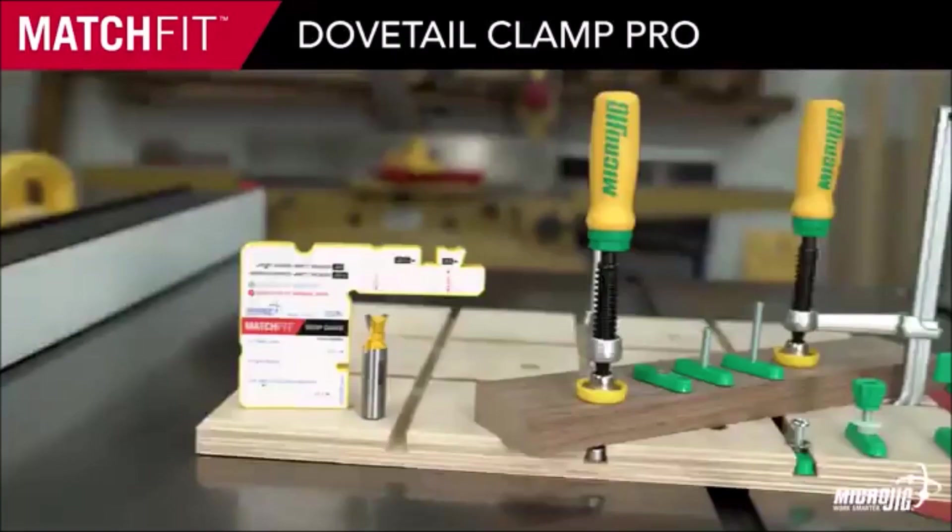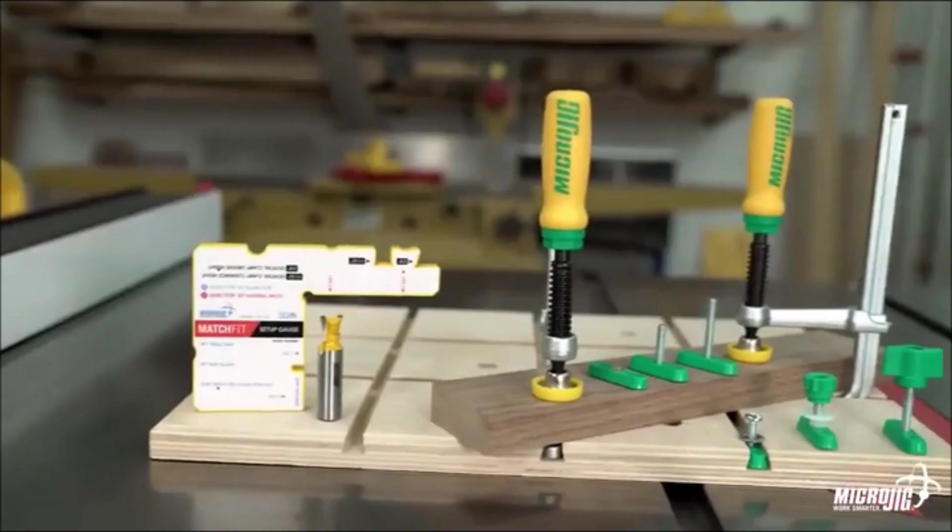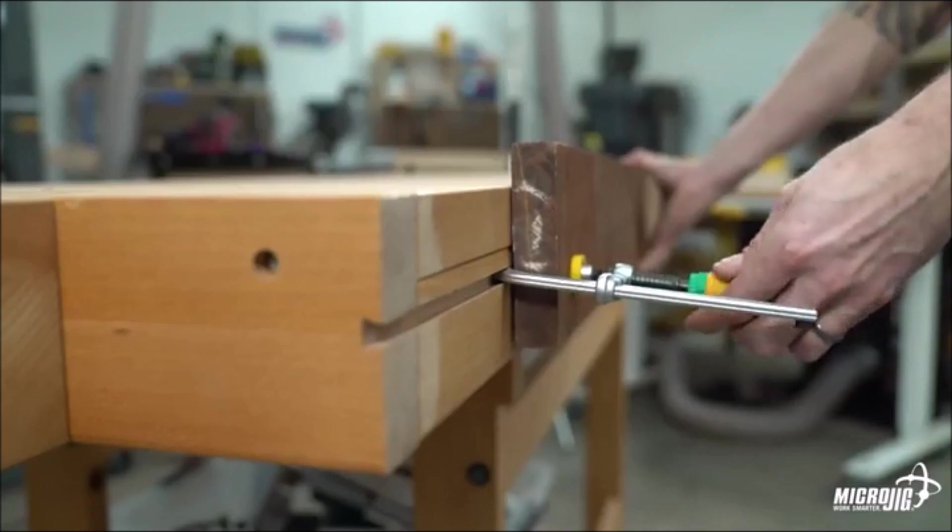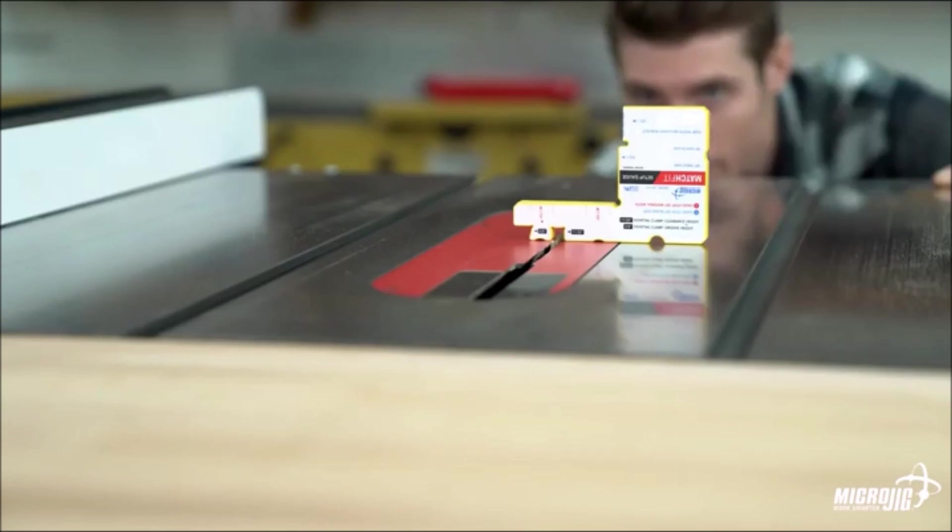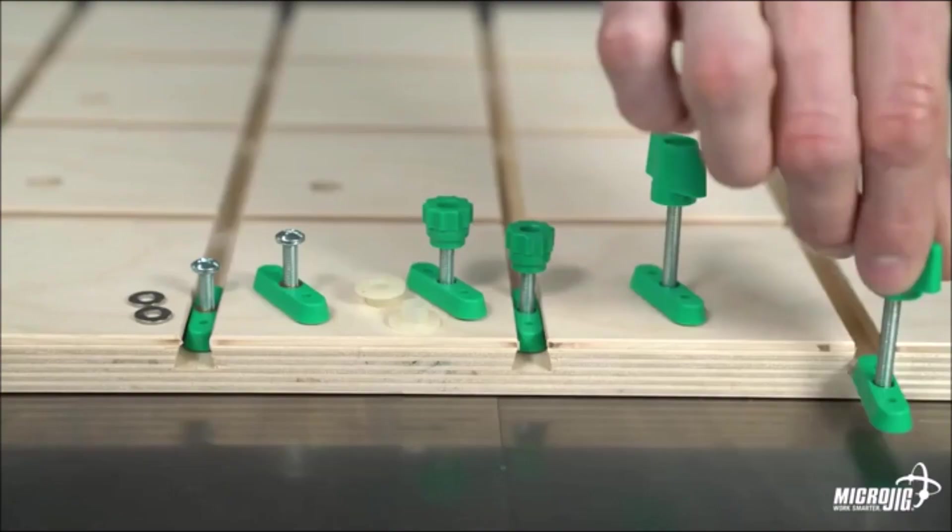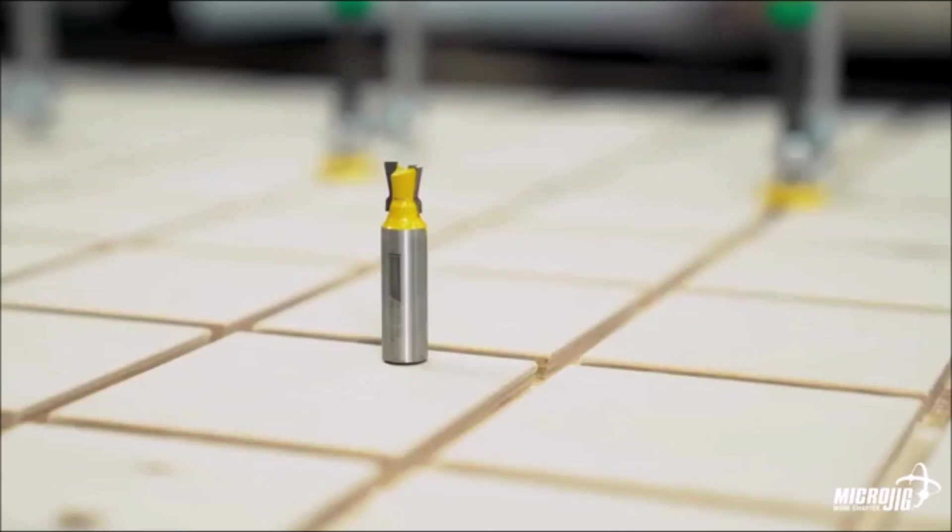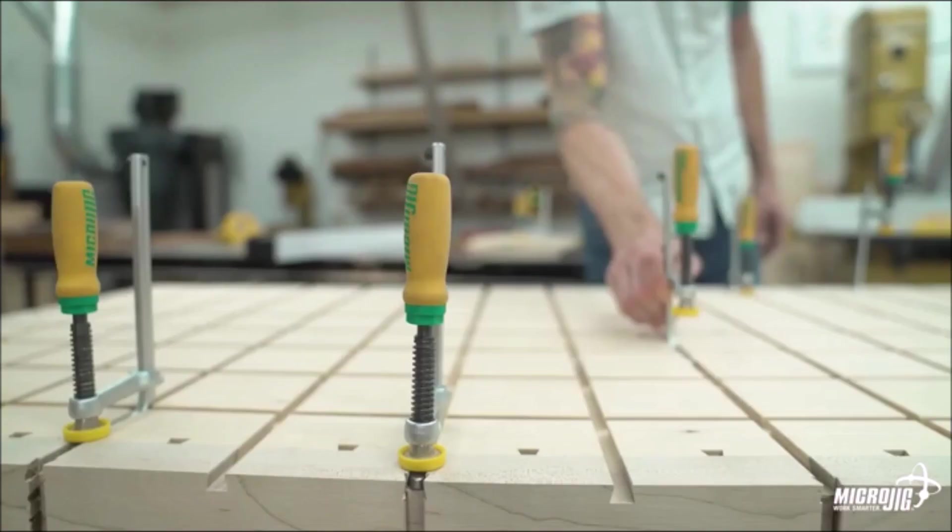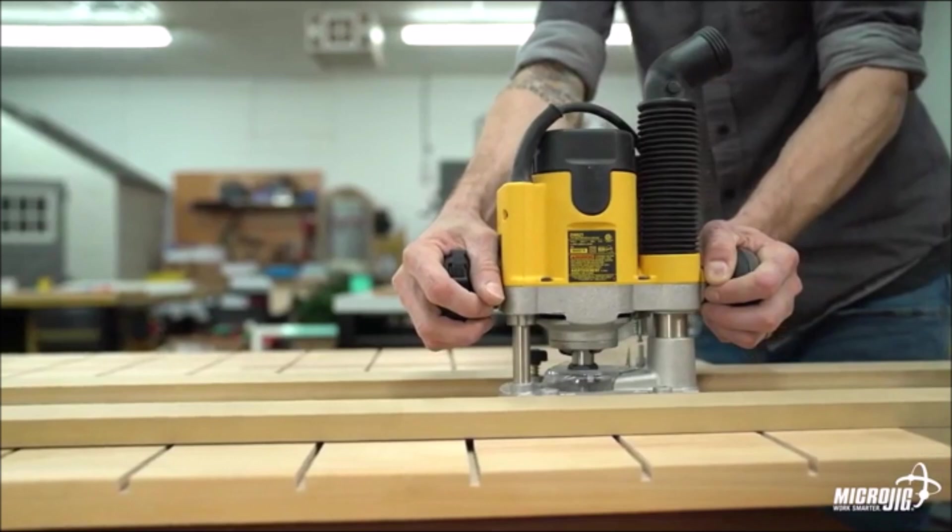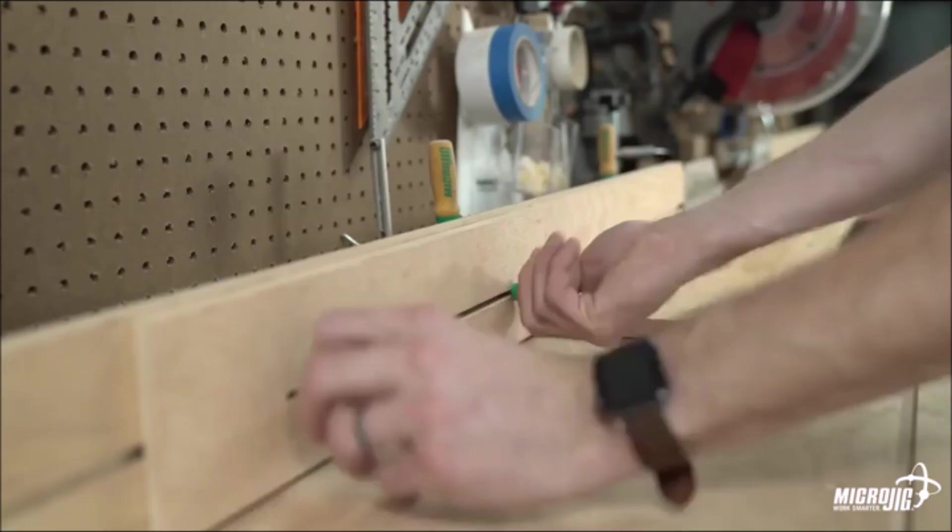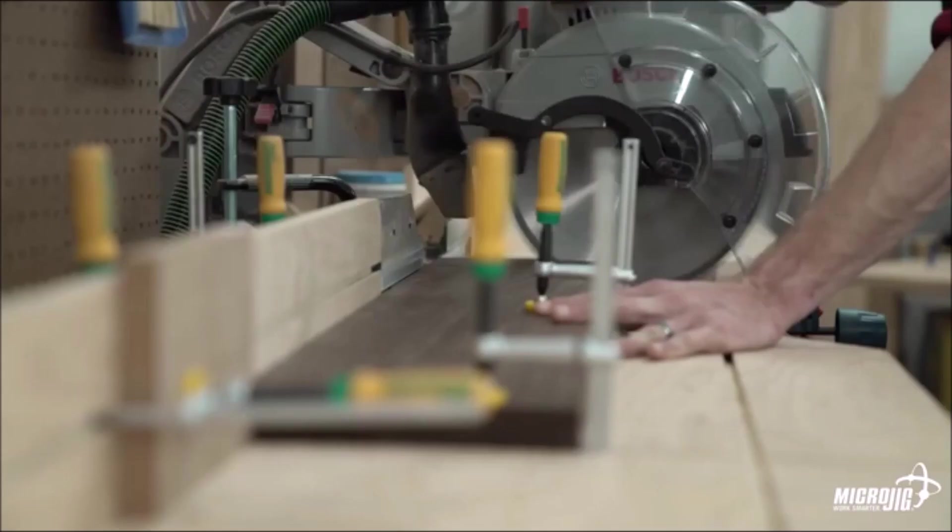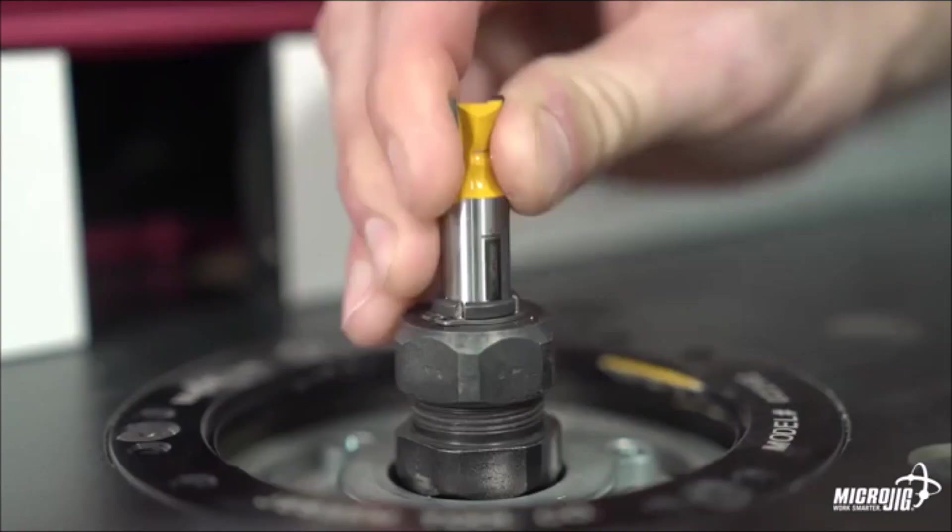Number 8, Microjig Matchfit DVC Dovetail Clamp Pro. It's everything you need to create your own track system and take your woodworking to the next level. Use the Matchfit setup gauge to set the cutting depth of the dovetail router bit and create your own tracks. The dovetail clamps and dovetail hardware move through the dovetail grooves below the surface of the material, allowing you to create a variety of jigs that move freely and secure your workpiece anywhere you can root a groove. Create your own fences, stops, hold downs, and assembly fixtures in a snap.